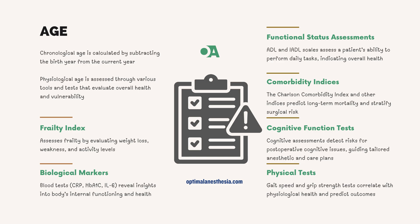Physiological age is where things get more interesting. This concept takes into account a person's biological condition and functional status, providing a deeper understanding of their health. Let's explore the key factors used to determine physiological age. First up, we have the Frailty Index, a tool that assesses physical frailty based on criteria like unintentional weight loss, muscle weakness, and low physical activity, giving us a snapshot of a patient's functional reserve and their vulnerability to stressors.